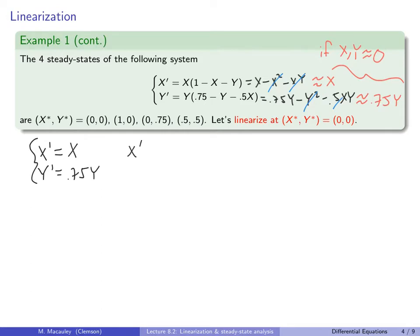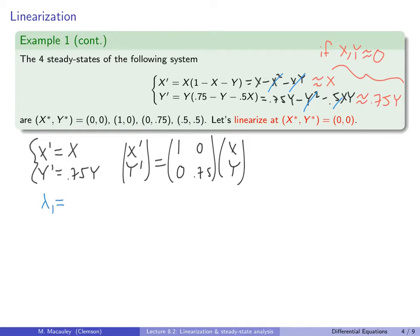In matrix notation, this is [x-prime; y-prime] = [[1, 0], [0, 0.75]] times [x; y]. This is a diagonal matrix, so the eigenvalues are read directly off the diagonal: lambda-1 equals 1, lambda-2 equals 0.75, with eigenvectors v1 = (1,0) and v2 = (0,1).